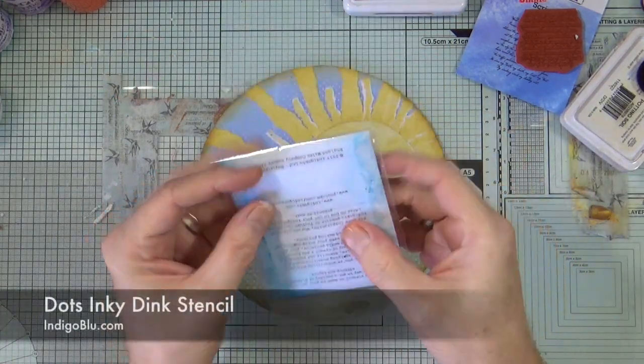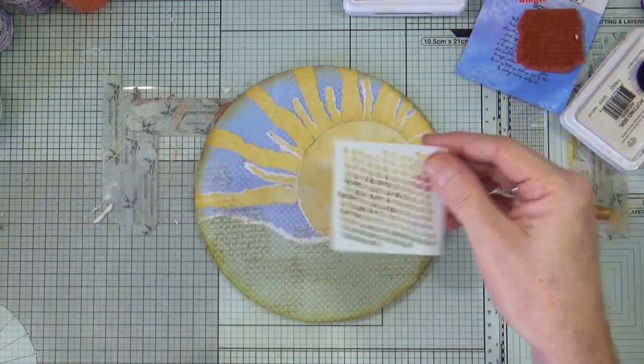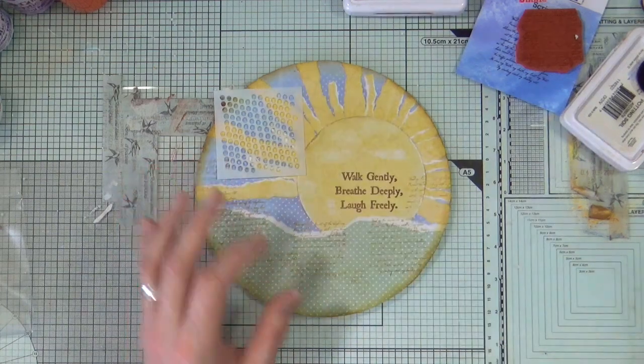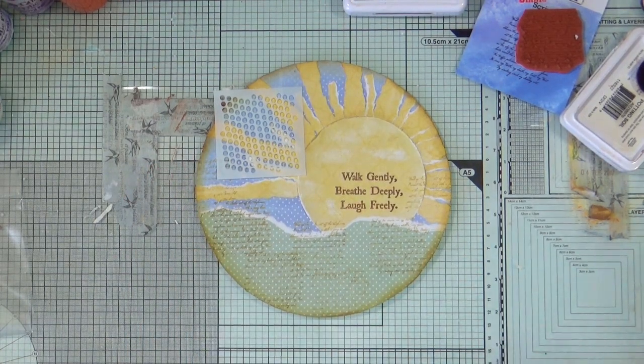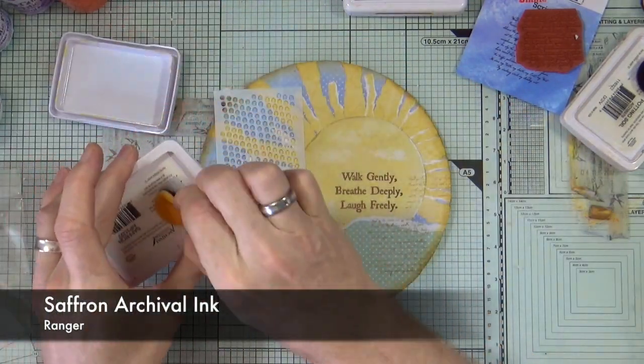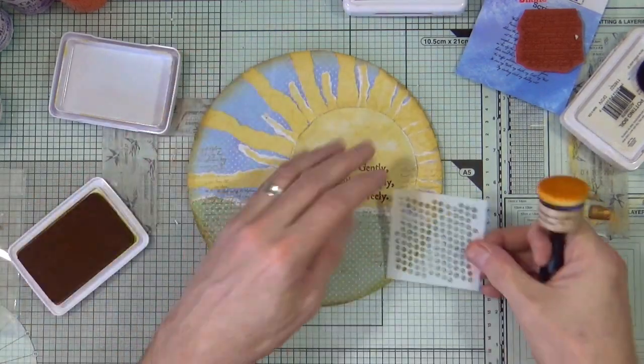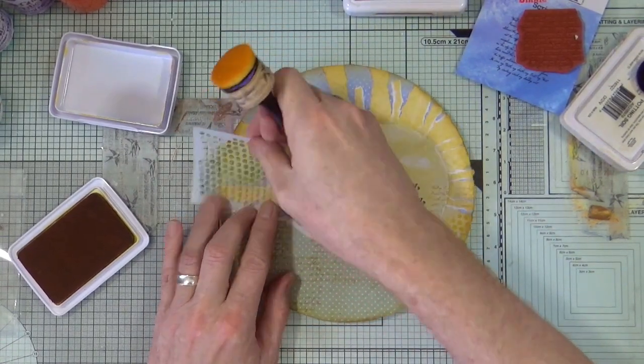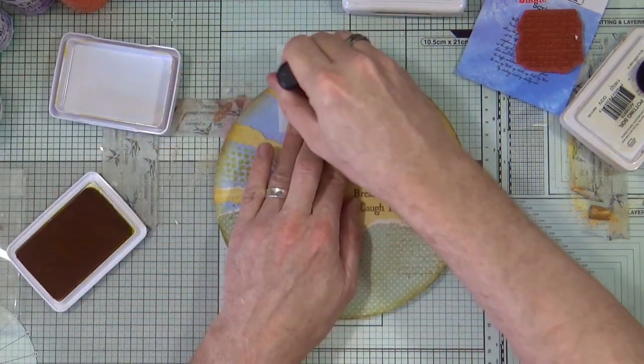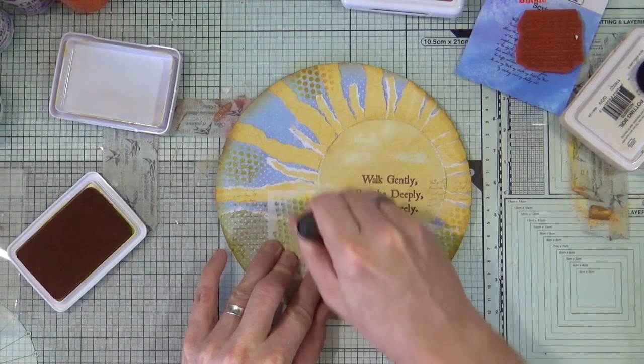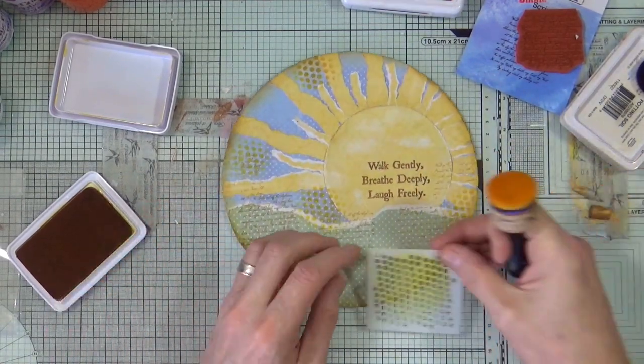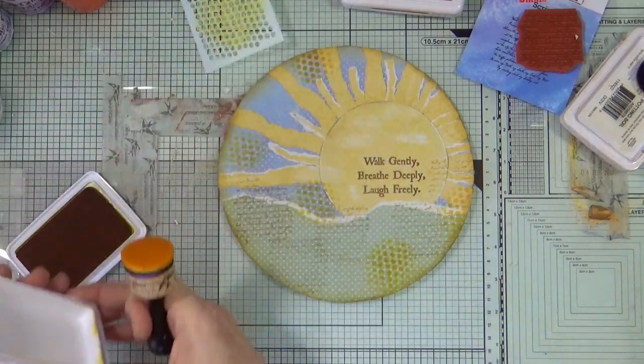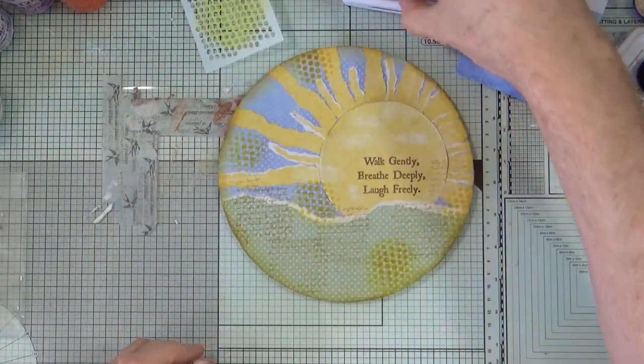Next up it's the Dots Inky Dink stencil. This is only a very small stencil and only measures approximately three by three. I'm going to use the Saffron archival ink with an ink blending tool and I'm just going to put the saffron ink through that little mini stencil just in a few areas around the page. I'm happy with the way that stenciling looks, it's all starting to create interest through the layers that we're adding to the page.